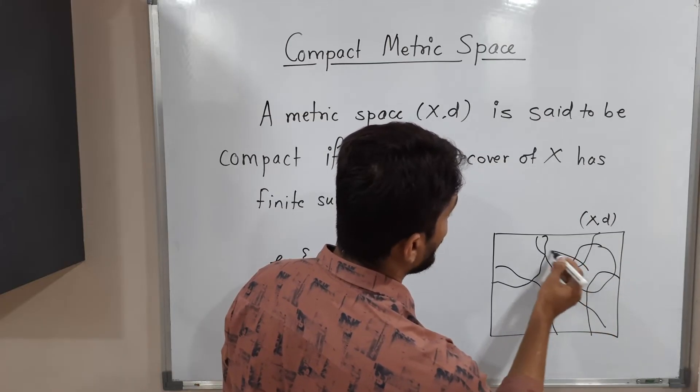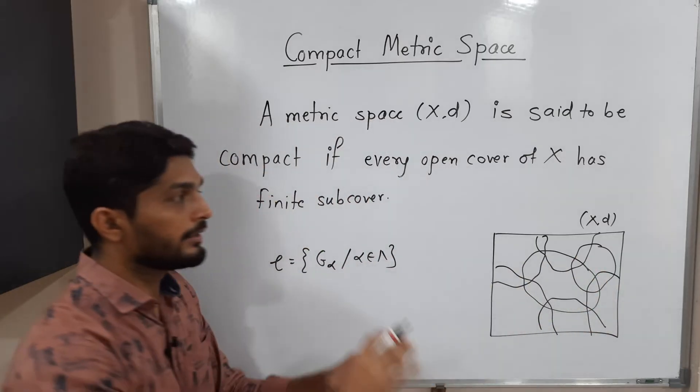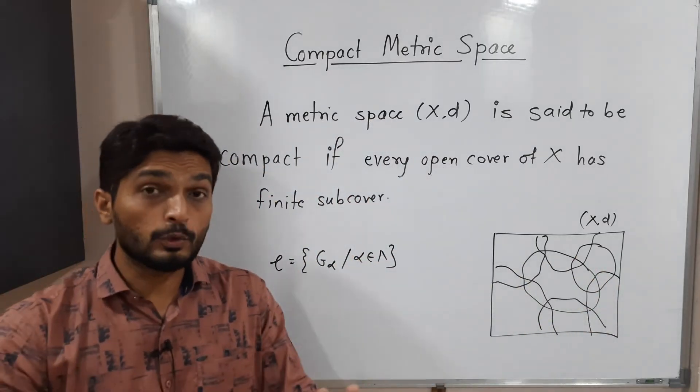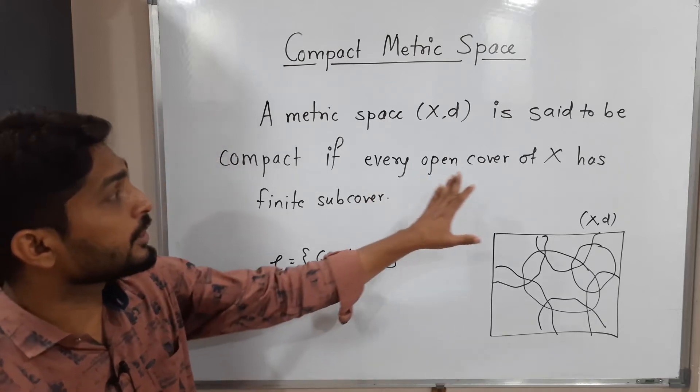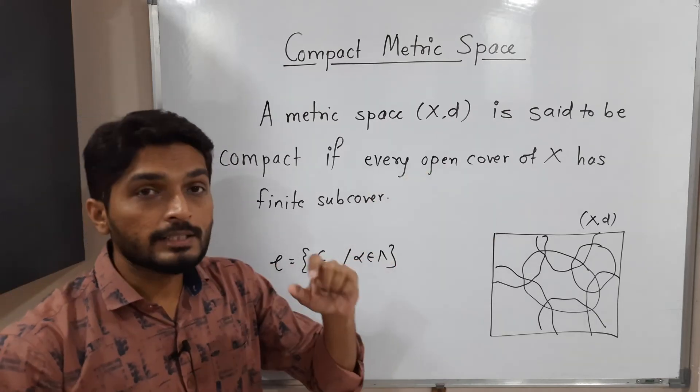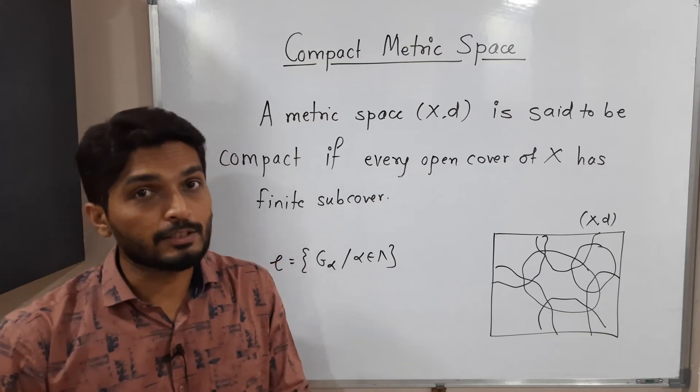Some sets are there, and all these sets are going to cover the entire metric space (X,d). Their union is the entire metric space (X,d). So suppose you have such a cover, and the specialty is it is an open cover - each set should be open.